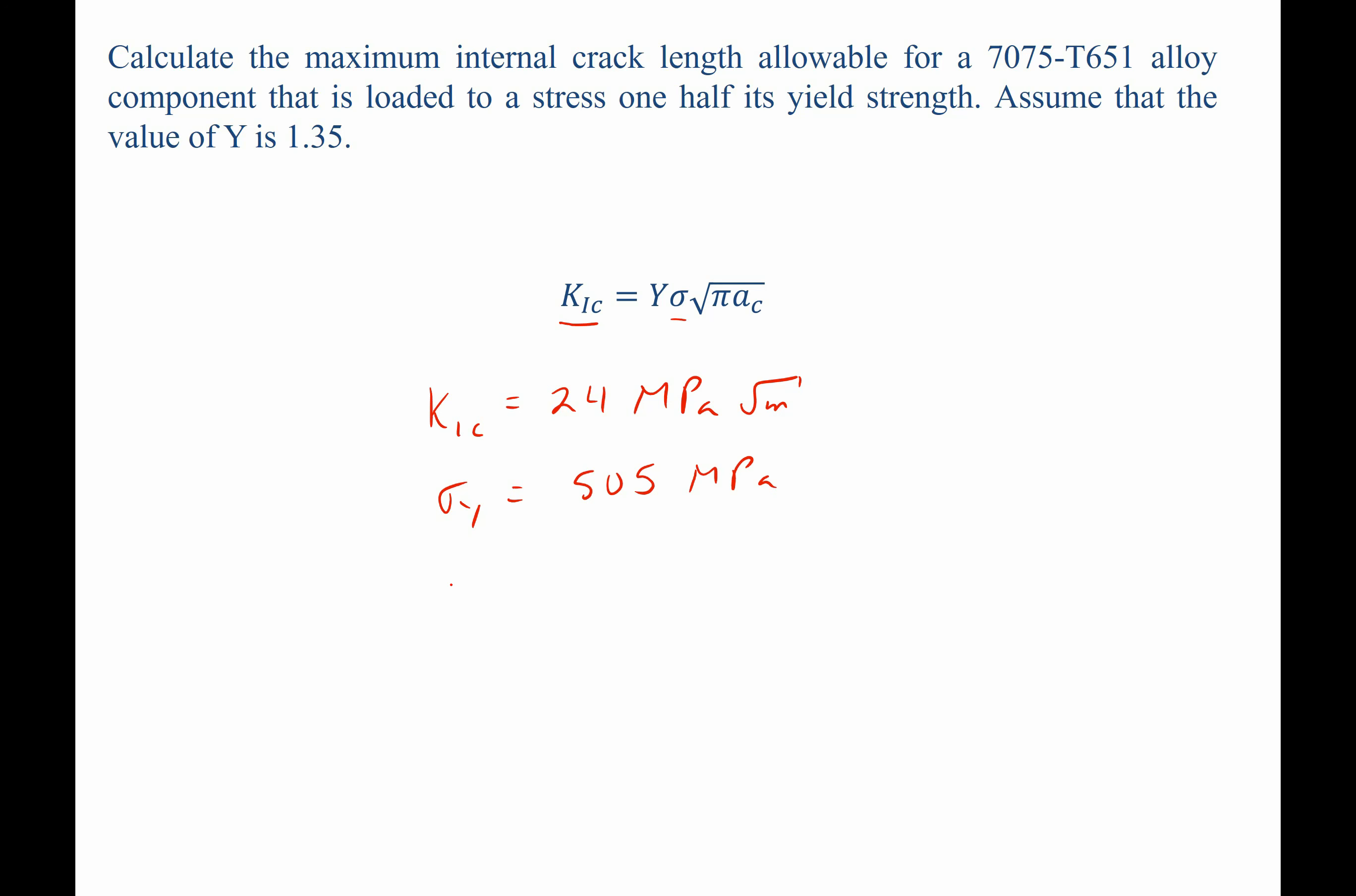We are only going to take it up to half of that value. So our applied stress will be the yield stress divided by 2, so it is going to be 505 divided by 2 megapascals.